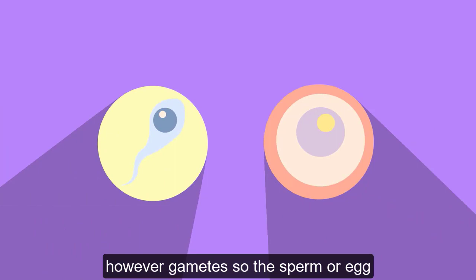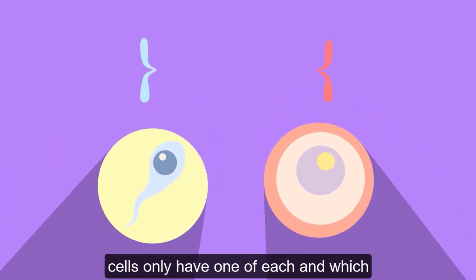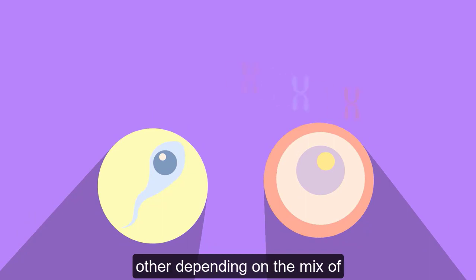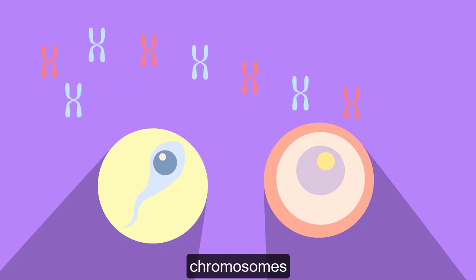However, gametes, so the sperm or egg cells, only have one of each. And which one, whether it is from the mother or the father, is random. This means that each of our gametes can be different from each other, depending on the mix of chromosomes.